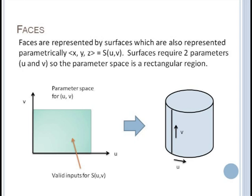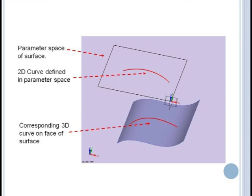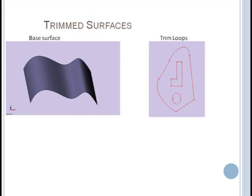The parameter space for a surface is usually some rectangular region corresponding to the min and max values of each parameter. Notice that drawing a 2D curve in the parameter space creates a 3D curve on the surface. If we make a set of nested loops out of these UV space curves then we can define a boundary in the parameter space which acts like a cookie cutter and defines a region on the face of the surface.